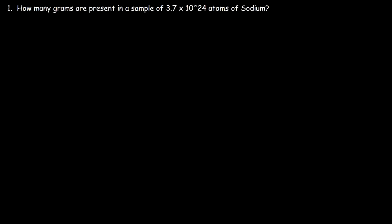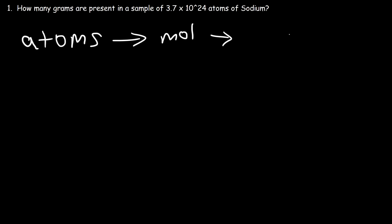In this video we're going to focus on converting atoms to grams. Here's an example problem: how many grams are present in a sample of 3.7 times 10 to the 24 atoms of sodium? Here's the blueprint of what we need to follow. We need to convert atoms to moles using Avogadro's number, and then we need to convert moles to grams using the molar mass.